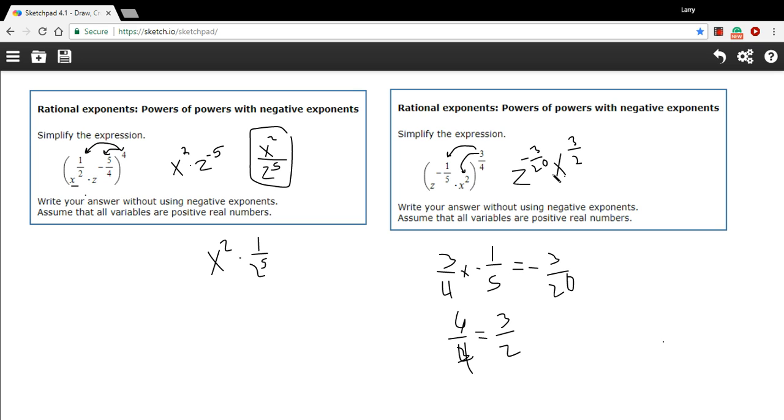Now we've got one of these variables with a positive exponent and one with a negative exponent. We'll do the same thing we did last time. We'll just take this chunk and move it down to the bottom of a fraction and make the power positive. So x to the 3 halves stays on top of the fraction and z is now to the positive 3 20ths when we move it down to the bottom of the fraction. And that is our answer with positive exponents.